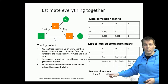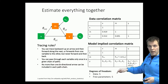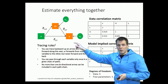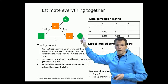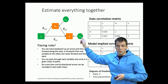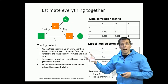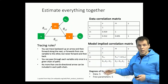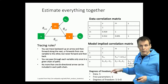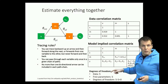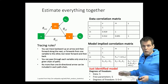Then we have five things that we estimate — five free parameters: our three regression coefficients, plus the variance of each error term. So we estimate five different things, and the degrees of freedom for this model are zero, because it's the difference between these two. We say this is a just-identified model.